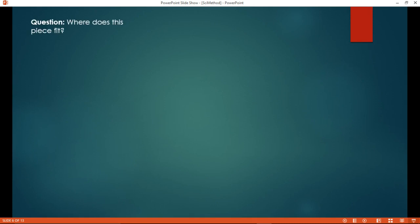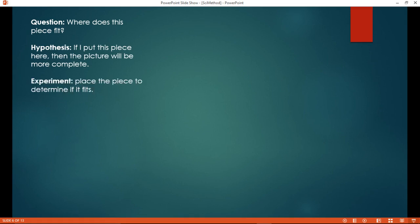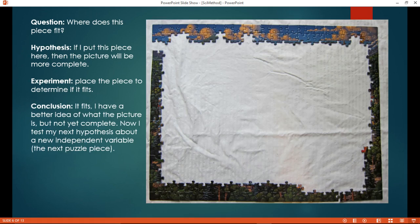So my question is, where does the piece fit? My hypothesis, if I put this piece here, then the picture will be more complete. The experiment placed the piece to determine if it fits. And my conclusion, if it fits, is that I have a better idea of what the picture is. It's not yet complete, but I'm getting an idea. And after each round, I can go and test a new independent variable, another puzzle piece.